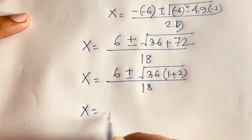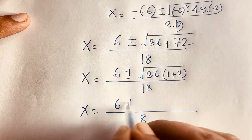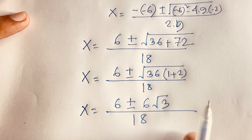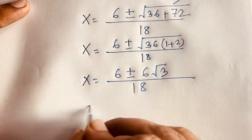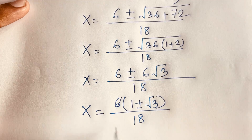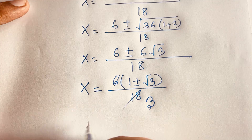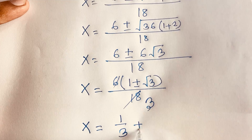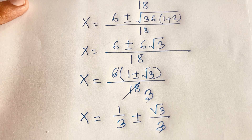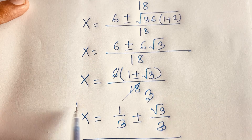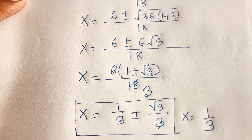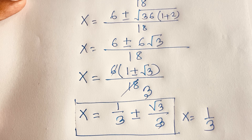Since 108 equals 36 times 3, the square root of 108 equals 6 root 3. So x equals (6 plus or minus 6 root 3) over 18. Factoring out 6 gives x equals (1 plus or minus root 3) over 3, which equals 1/3 plus or minus 1 over root 3. Our final answers are x equals 1/3 and x equals (1 plus or minus root 3) over 3. Thank you all — please subscribe for more interesting videos!